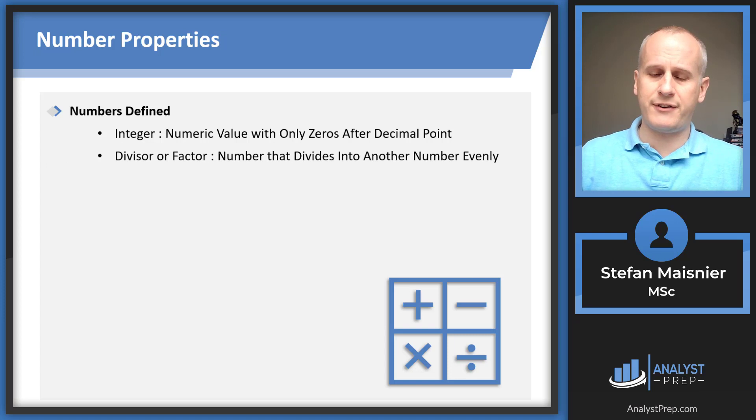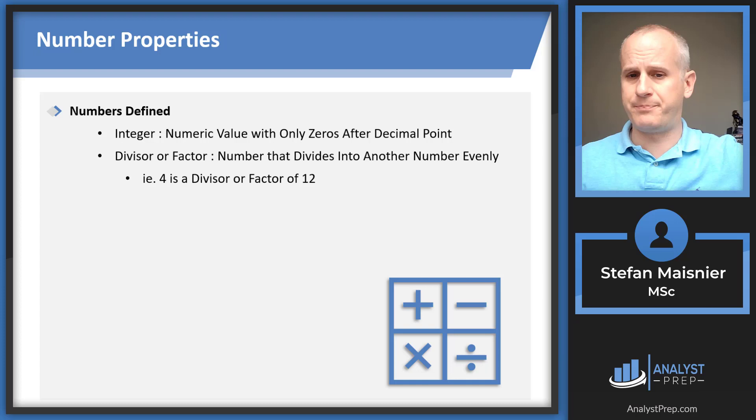A divisor or a factor is another concept that is generally applied to integers, but it technically is a number that divides into another number evenly. It could technically involve a fraction, say one-fourth would be a divisor or factor of one half, but 97 times out of a hundred, this is going to be a concept applied to integers. Let's consider divisors and factors in relationship to an integer such as 12. Four would be a divisor or factor of 12 because four goes into 12 exactly three times. That's how you can consider a factor - it will evenly go into the number you're testing.